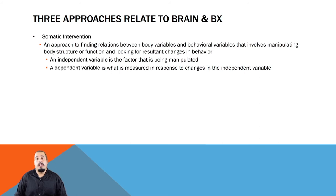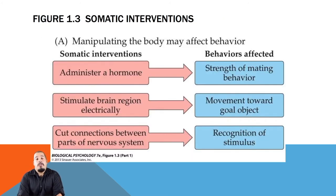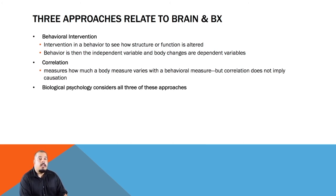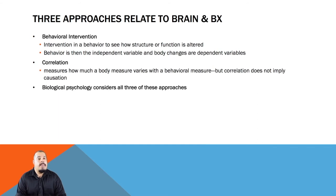Here is an example of somatic intervention: the somatic interventions alter the brain and body, and then a researcher would see how those changes affect behavior — the somatic interventions are the independent variables. In experiments involving behavioral intervention, the behavior of individuals is altered in a controlled manner and the consequent alterations of neural structure and function are noted. The behavior is the independent variable and the effect on the brain and body is the dependent variable. In the correlational approach, the covariance of behavioral and neural events may give rise to hypotheses about the function of the nervous system. Unlike the previous two approaches, correlation cannot infer causation — you can't state that variable A causes variable B. The only way to determine causation is by using an experimental technique where manipulation occurs.